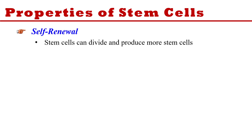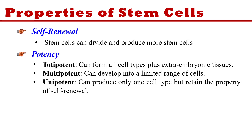Now the properties of stem cells. First is self-renewal — stem cells have the capacity to divide and maintain their population. One stem cell can divide and produce many more stem cells, meaning they can self-maintain their population. The second property is potency, meaning they can change into other cells.